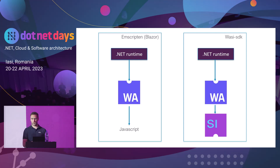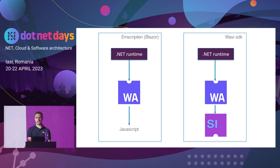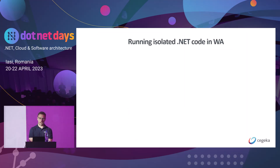The idea is that we want to be WASI compliant to execute everywhere. We deploy as a WASM module and interact with operating system features like files or network using the system interface we talked about. For that there is a library called WASI SDK, which is now in preview state. It's really at the beginning. So we want to execute .NET within WebAssembly.